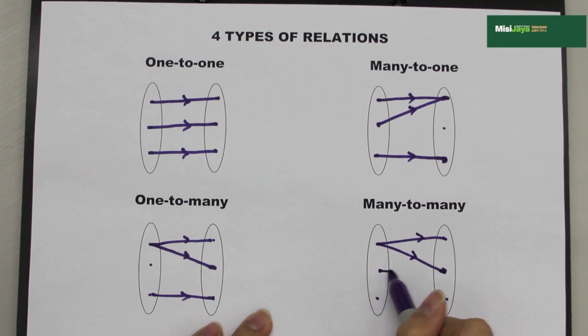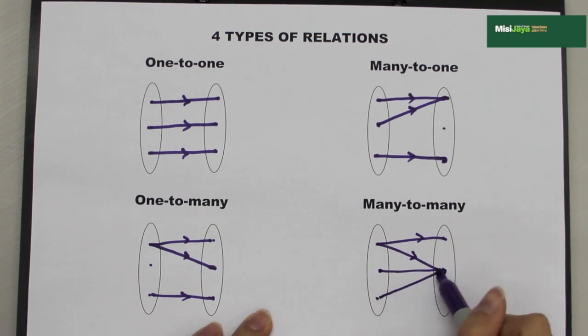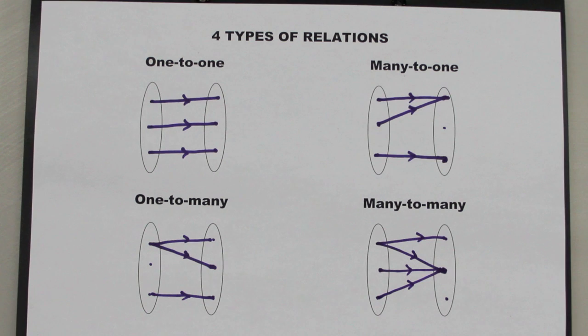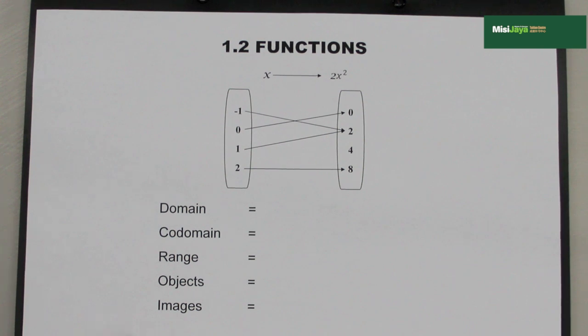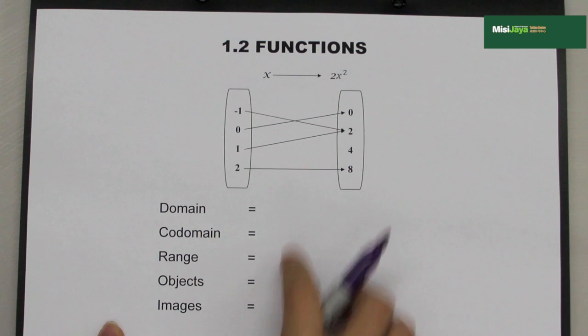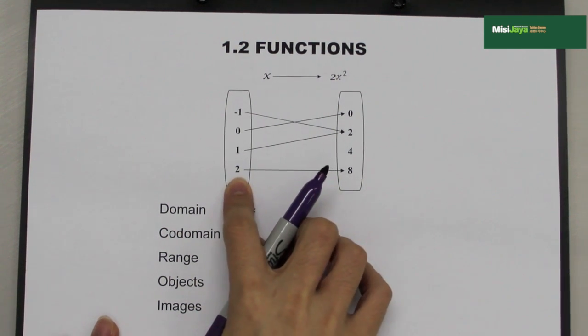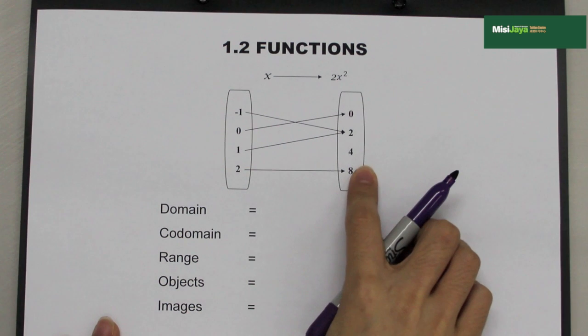Or 2 objects have the same image. In functions, there are a few important terms that we have to remember. Firstly, the domain. In this question, the domain will be on the left-hand side.